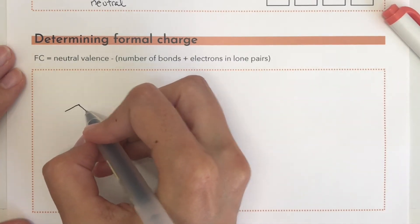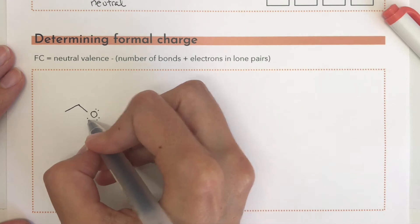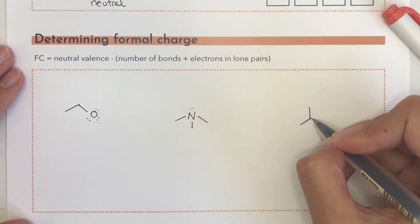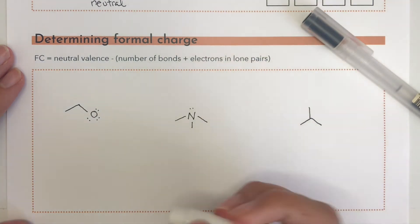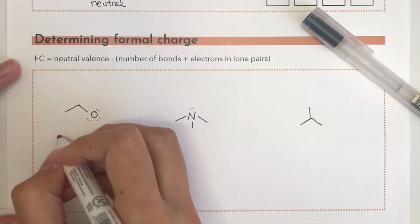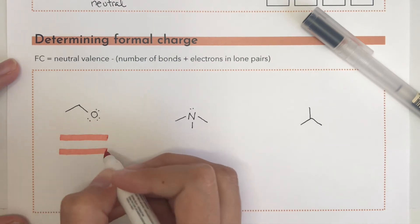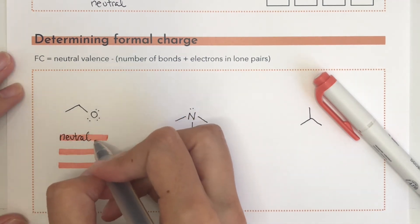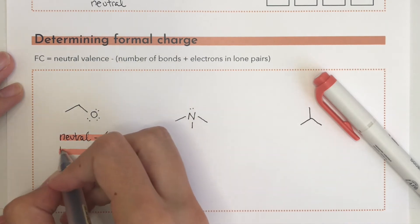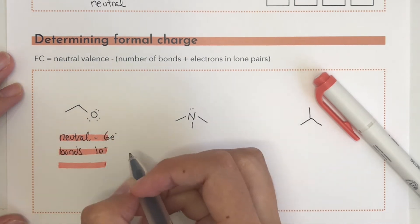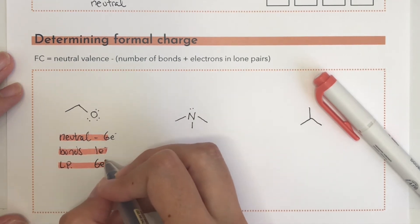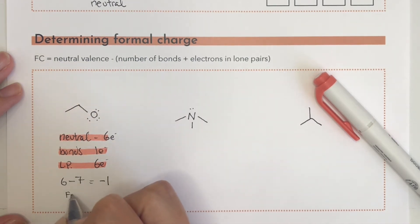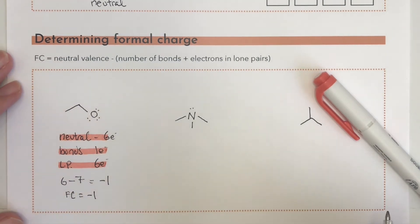Let's take a look at those same three molecules from the first section of the notes and pretend that we didn't already know their formal charges. We can calculate a formal charge using the formula: formal charge equals the number of neutral valence electrons minus the number of bonds and the number of electrons in lone pairs. We'll focus on the oxygen atom — a neutral oxygen has six valence electrons. In this molecule the oxygen has one covalent bond and six lone pair electrons, so six minus seven equals negative one. We've shown that this atom has a formal charge of minus one.